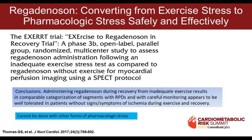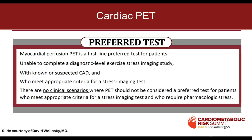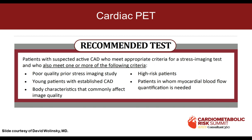The next step up from stress echo or stress myocardial perfusion imaging is cardiac PET, with about 10% of studies done with PET in this country. Per American Society of Nuclear guidelines, PET is a first-line preferred test for somebody who can't exercise with suspected coronary disease meeting appropriate use criteria for stress imaging. It's also the test of choice for patients with poor quality prior stress imaging, young people where you want to minimize radiation, obese patients with poor SPECT images, high-risk patients, and those where myocardial blood flow will help make the diagnosis.